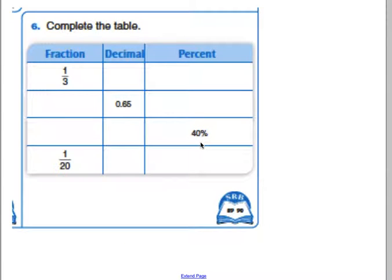How do you change a decimal into a fraction? And how do you change a decimal into a percent?